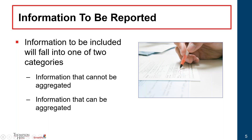The thinking is that transparency in pricing will reduce waste and allow individuals and group health plans to make better-informed decisions surrounding prescription drug care and coverage. The information to be reported generally falls into one of two categories: information that cannot be aggregated and information that can be aggregated. Unfortunately for group health plan sponsors, most of the information will be unavailable to them, so it's important to reach out to your vendors, your PBMs or TPAs, to rely on them in assisting with compliance.